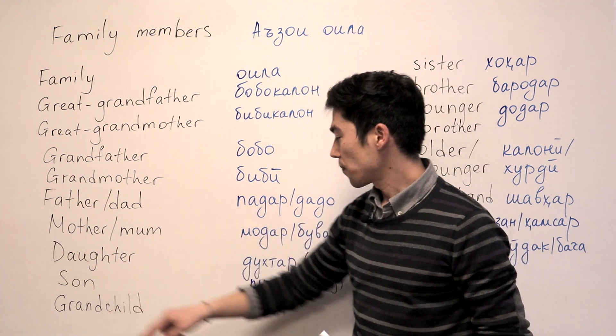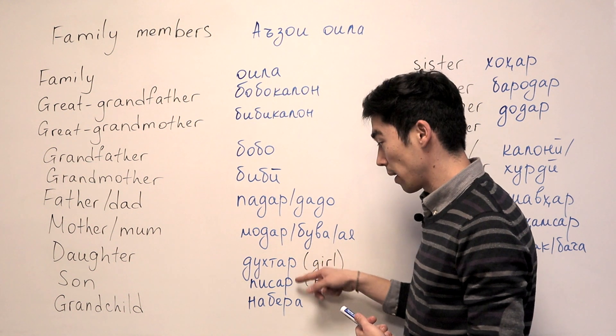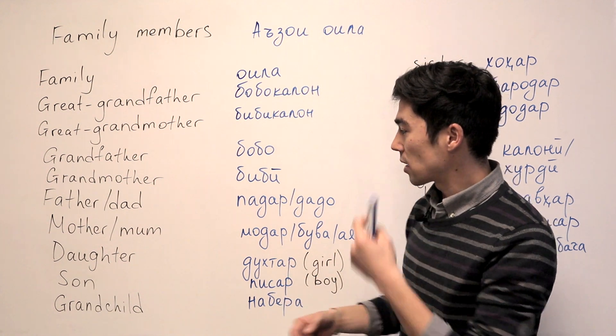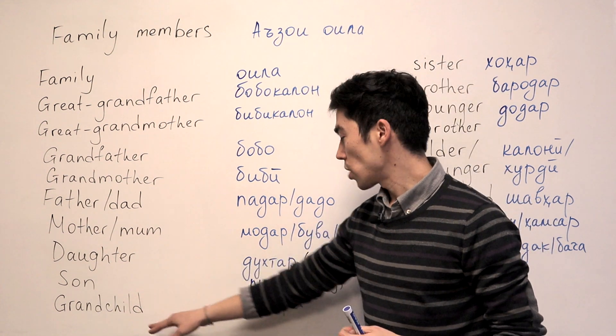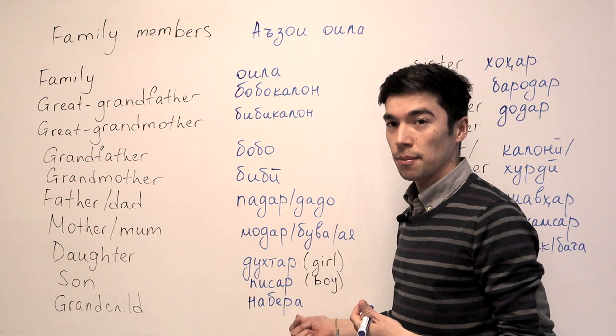And son will be Pisar or boy. The same like with Dukhtar, girl. Boy will be Pisar. And the last one, grandchild. Grandchild will be Nabire. It doesn't matter if it's a girl or a boy. You can just say Nabire.